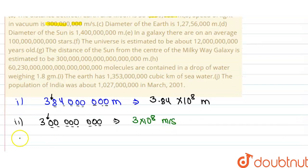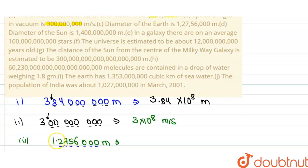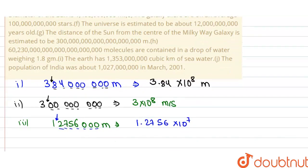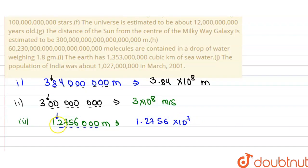Now the third number: the diameter of Earth is 1,212,756,000 meters. Just count the digits: 1, 2, 3, 4, 5, 6, 7 — counting the places before the first digit. So we have 1.2756 × 10⁷. The count is 7, so the answer is 1.2756 × 10⁷. After the decimal places, write down the non-zero digits: 2756.